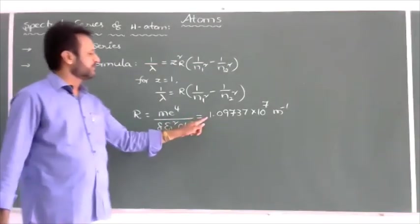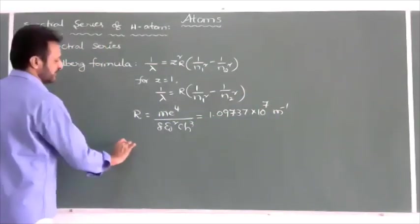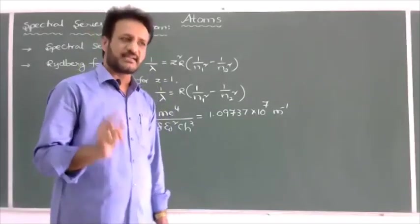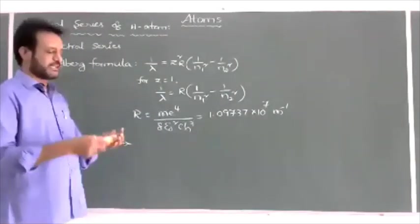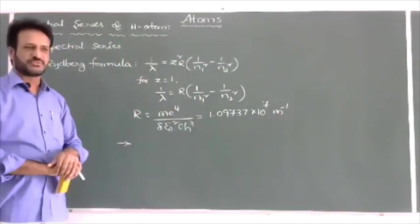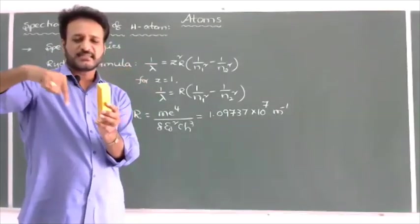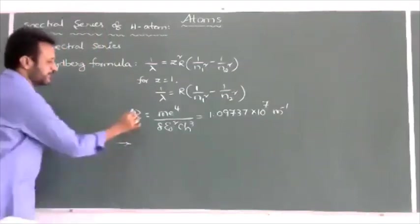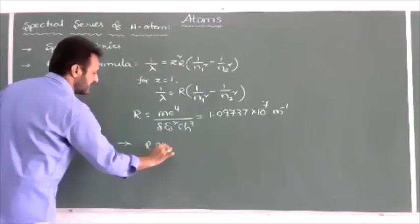In numericals, we can use R = 1.097 × 10⁷ m⁻¹. Sometimes in exams a question is asked: instead of an electron, a hypothetical particle is chosen having double the mass of the electron — it is revolving around the nucleus of a hydrogen atom. In the Rydberg formula, R is directly proportional to mass, so R₁/R₂ = M₁/M₂, provided the charge is the same.